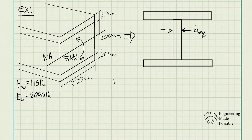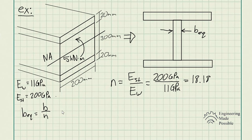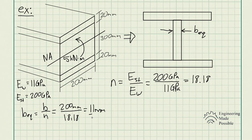First, solve for the transformation factor n, which is the modulus of elasticity of the strong material (steel) divided by the modulus of elasticity of the weak material (wood), giving us 18.18. Then, to solve for the equivalent width B_eq, we divide the original width of the wood by the transformation factor, which gives us 11 millimeters.